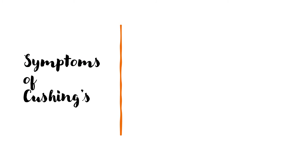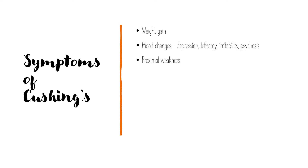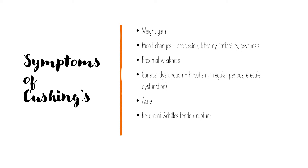Symptoms of Cushing's syndrome: often the patients will complain of weight gain. They may exhibit mood changes, so be mindful — if you're in a psychiatric setting, there may be an organic cause for thinking about Cushing's when you see patients potentially presenting with psychosis. They may get symptoms like proximal weakness, gonadal dysfunction — so this is a male pattern hair growth or hirsutism in women — irregular periods as well, and erectile dysfunction in men. Acne might also occur, and some patients actually get recurrent Achilles tendon rupture.